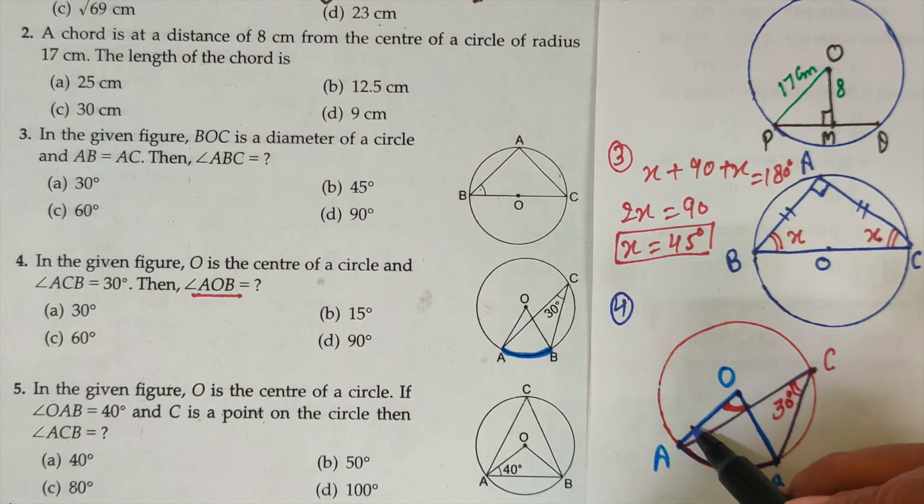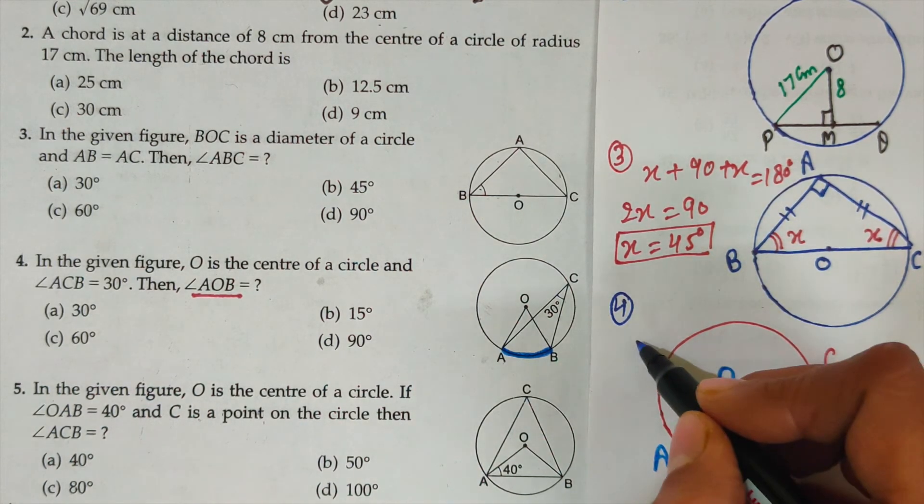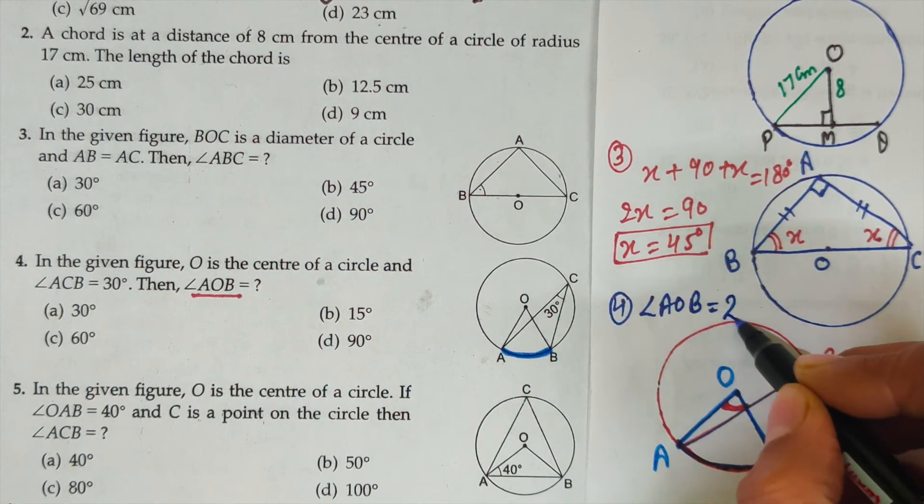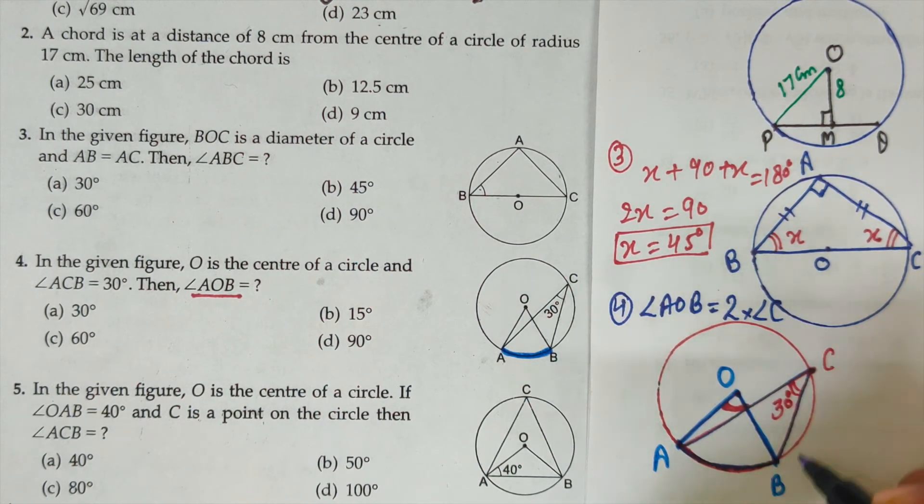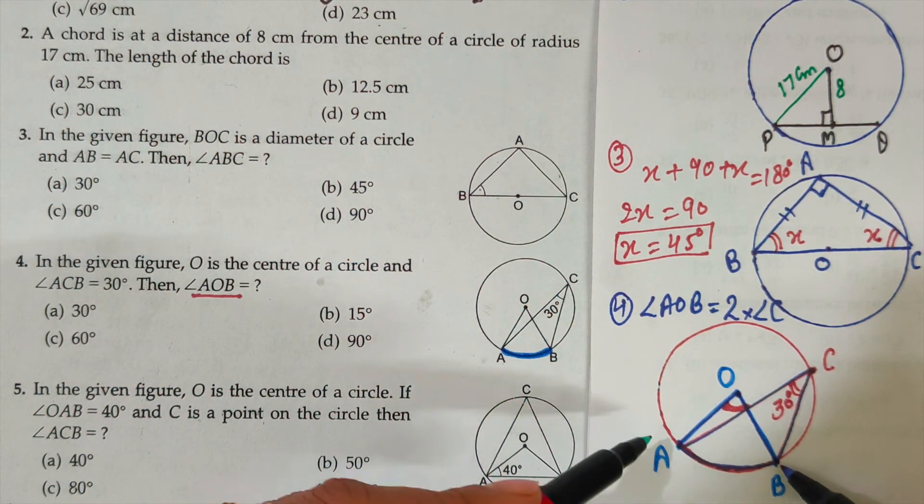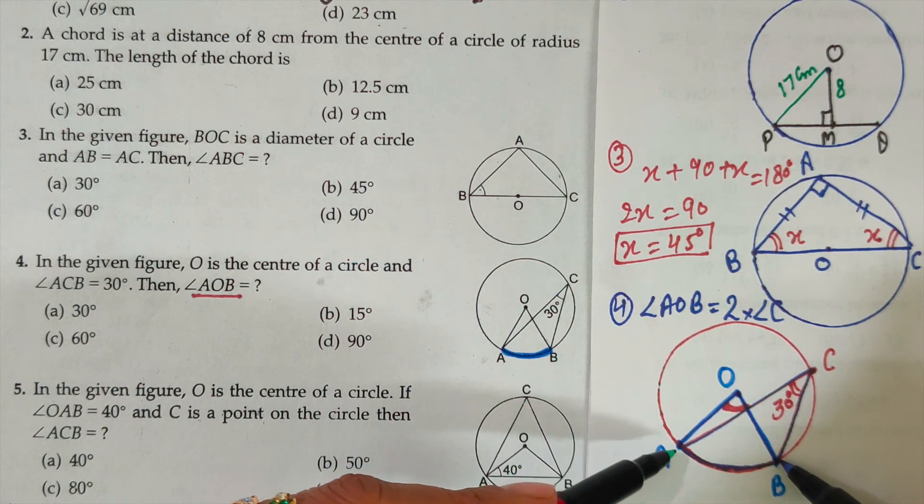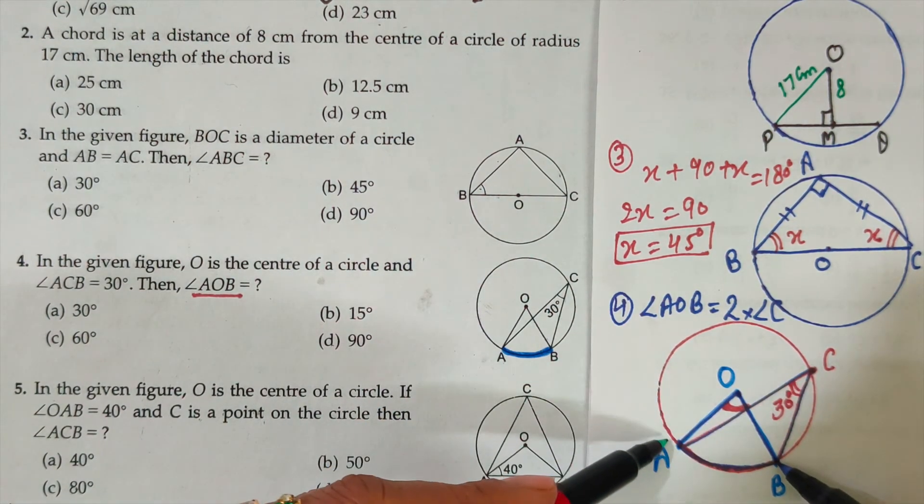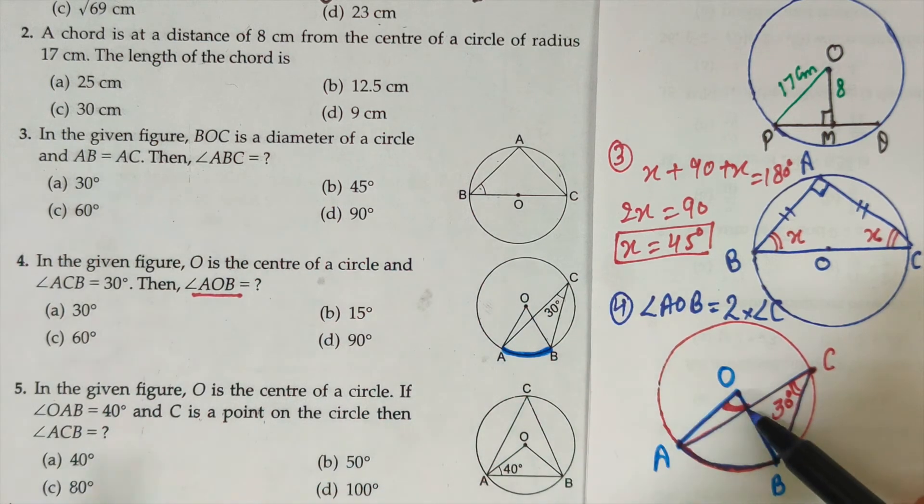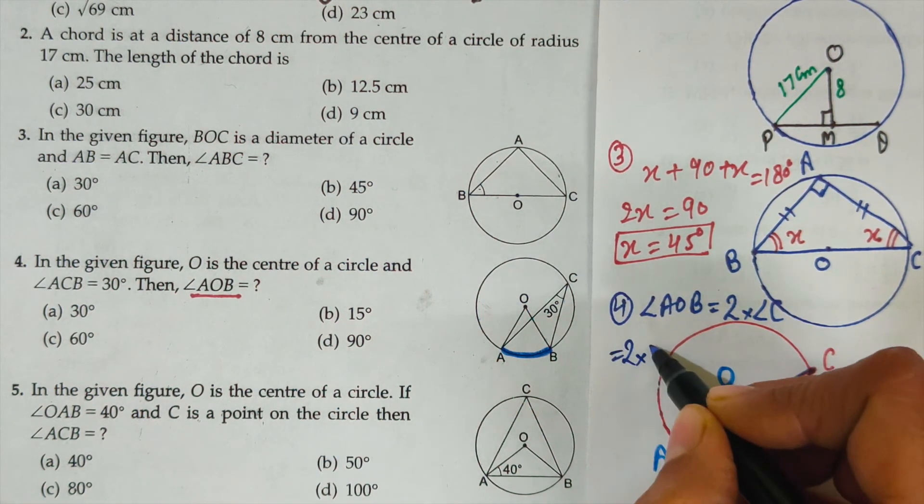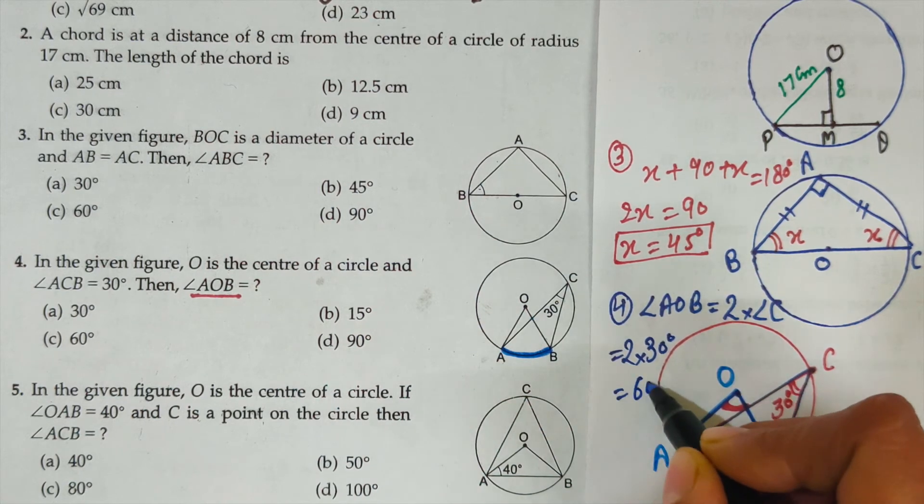We know the theorem: angle subtended by an arc. Same arc connects points A and B to point C, and the same end points A and B join at center. So we know the theorem: angle subtended by an arc at the center is twice the angle subtended by same arc on the boundary. Center angle is always twice. That is angle AOB. The arc should be the same. You can understand this way: put two fingers on these end points A and B, and the same points join on the boundary and with the same points joining at center. So center angle is always double. So our center angle is twice of angle C, that is twice of 30 degree. The angle will be 60 degree.